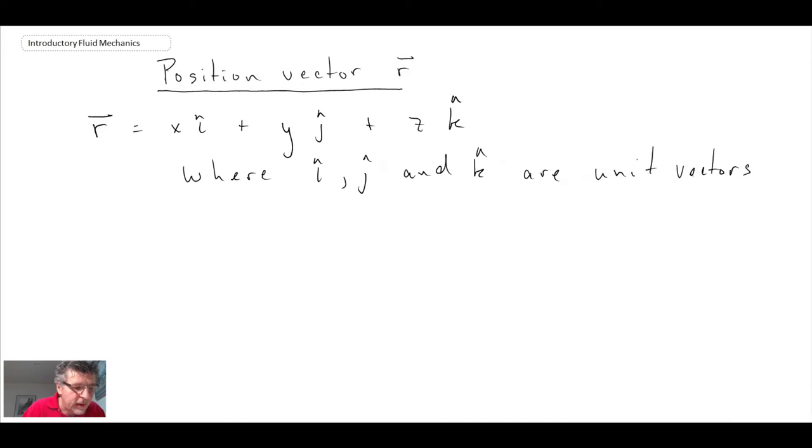If you recall, the property of the unit vector is that the magnitude of the unit vector is equal to one. So if we were to compute the magnitude of any of the unit vectors, we would get one.